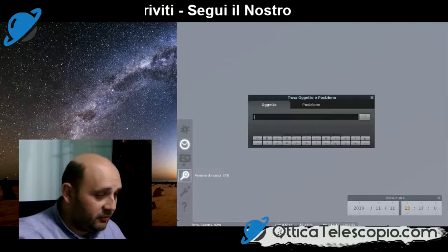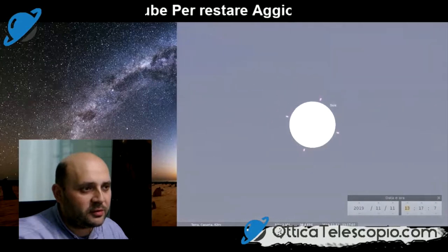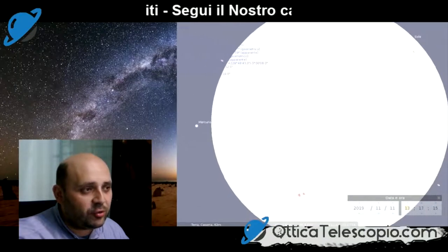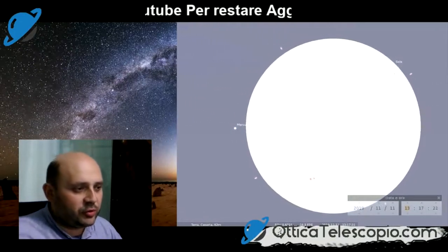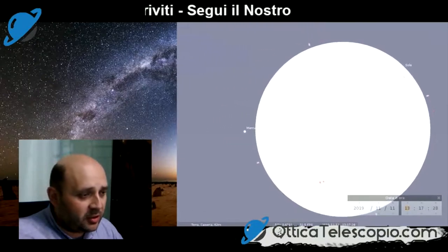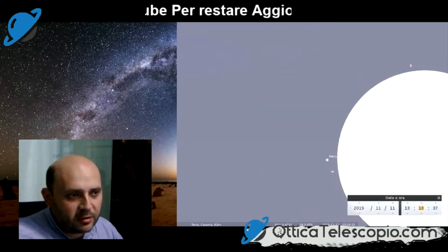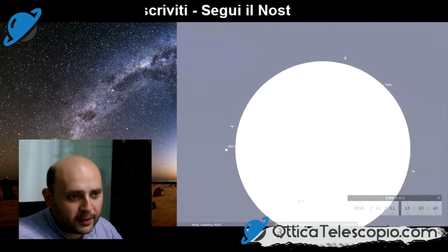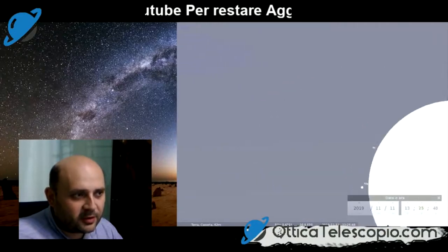Siamo a 62 metri dal livello del mare. Abbiamo impostato tutti i parametri: il luogo dove ci troviamo, la data dell'11 novembre e l'ora. Il contatto iniziale è alle 13 e 35. Come vedete, Mercurio si avvicina sempre di più al sole. Primo contatto alle 13 e 35: vedete che Mercurio è vicinissimo al sole e attraverserà il sole nella sua parte centrale.